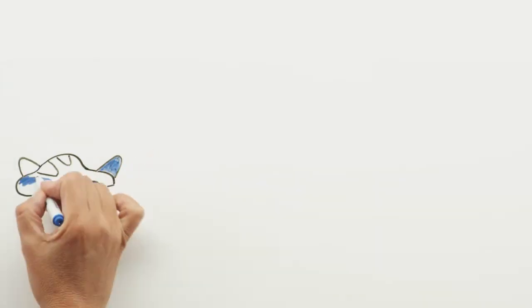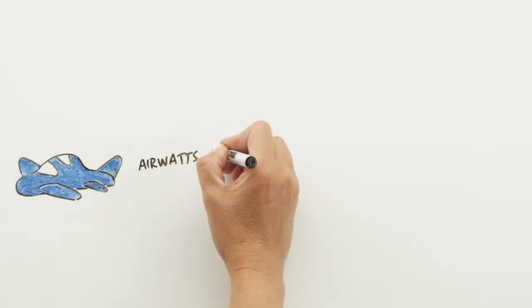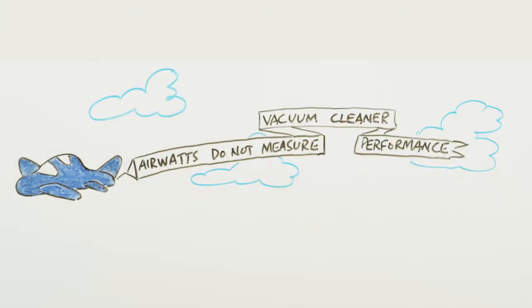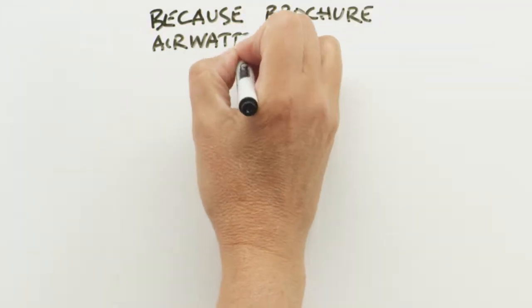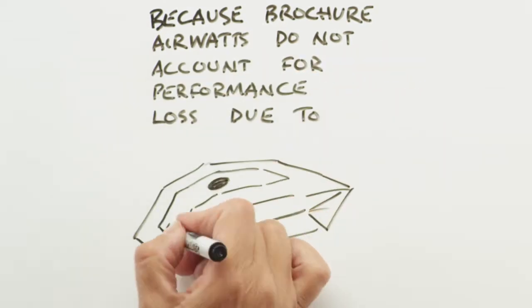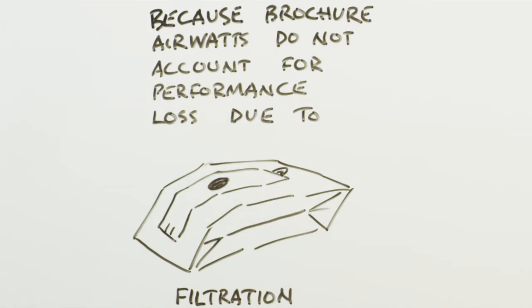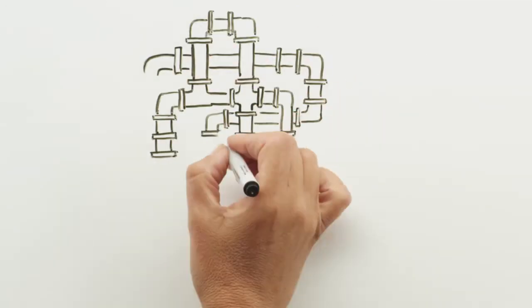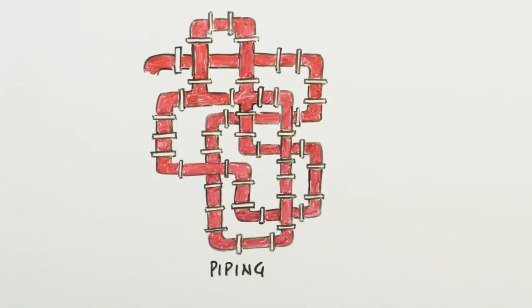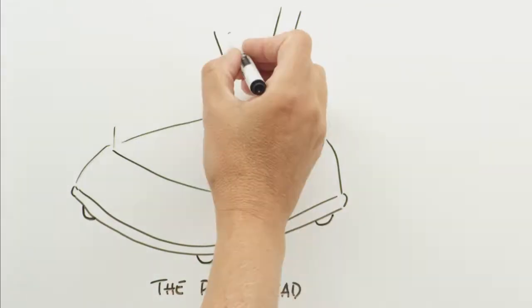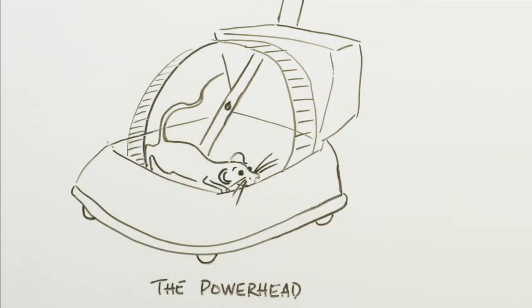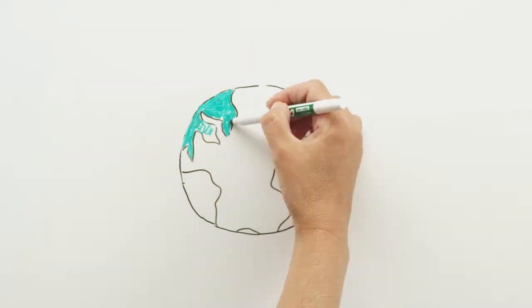But let me repeat what I said before. Advertised airwatt do not measure vacuum cleaner performance, because brochure airwatt do not account for performance-robbing restrictions such as filtration. Piping is another factor that could lead to decreased performance. What about the power head? The style and age of the power head may contribute to performance loss. Finally, the hose.